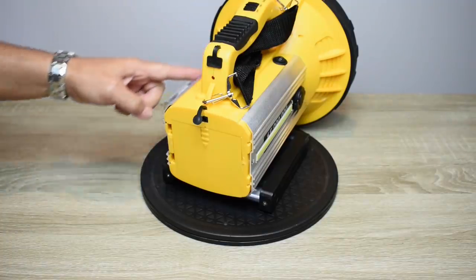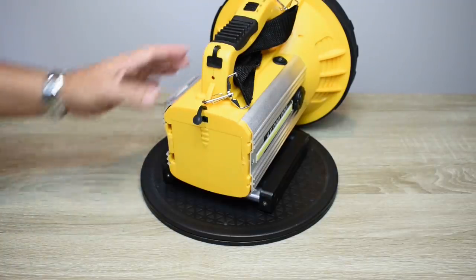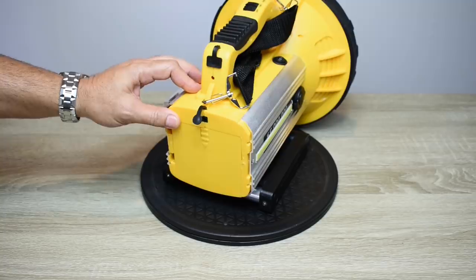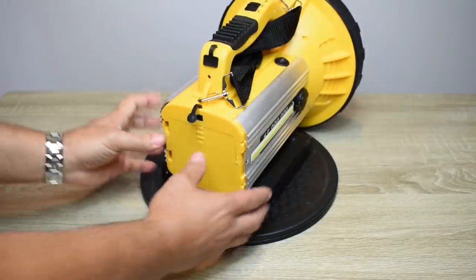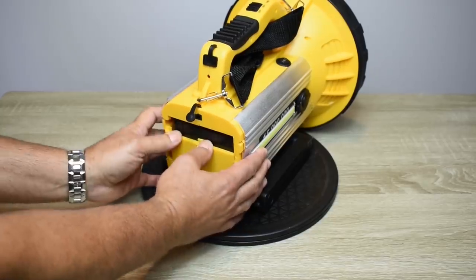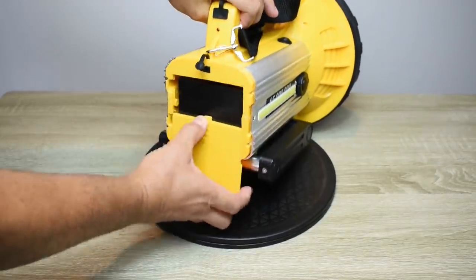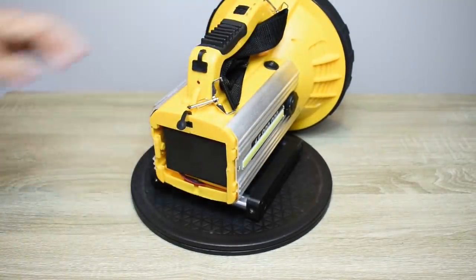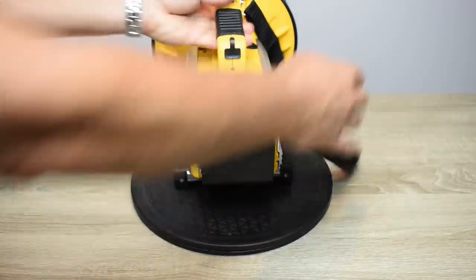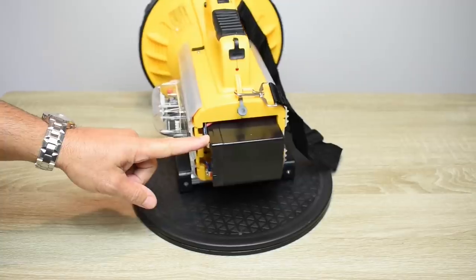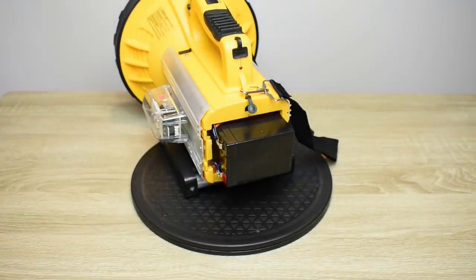So to get started let me remove these screws so we can pop this cover off the back. Many newer lights use plastic that's made to look like aluminum, but this strip of metal here and the strip of metal on this side is made of extruded aluminum.